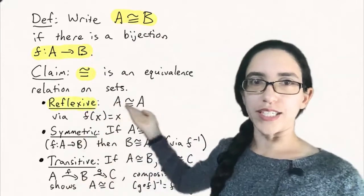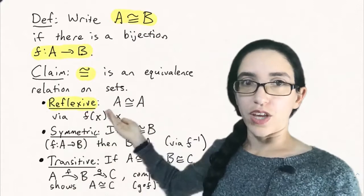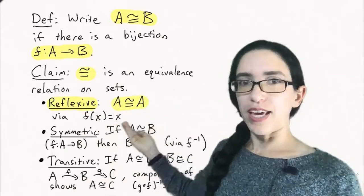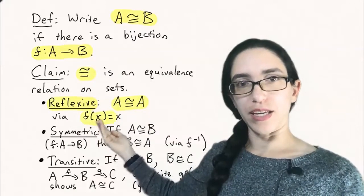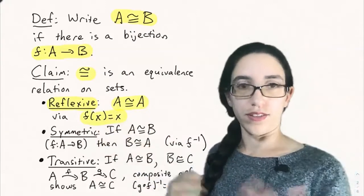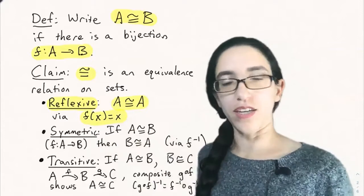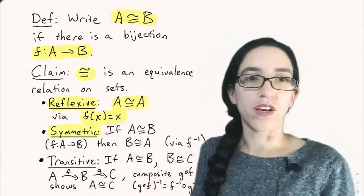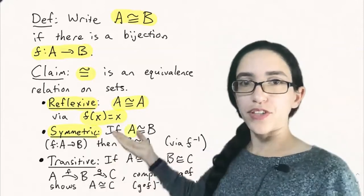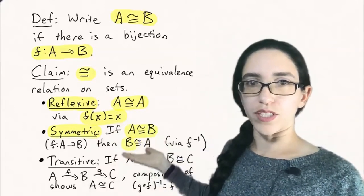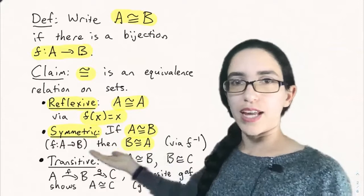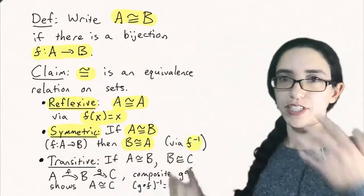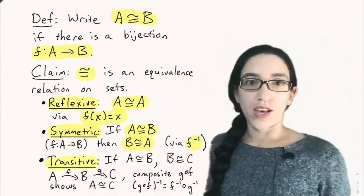Reflexive says that any set is related to itself. So is there a bijection between any set A and itself? Yes. The bijection that sends any element x to itself, x just goes to x itself, then that's a bijection because it inverses itself. So that's reflexive. Symmetric says that if A is equivalent to B, then B is equivalent to A. And indeed if there's a bijection from A to B, then its inverse is a bijection from B to A. And finally,